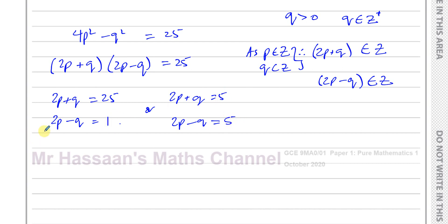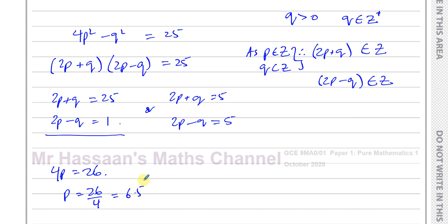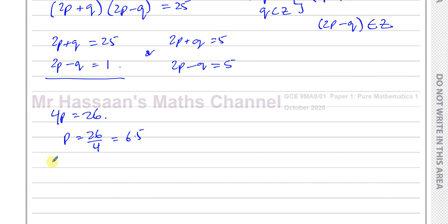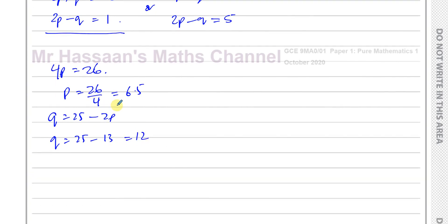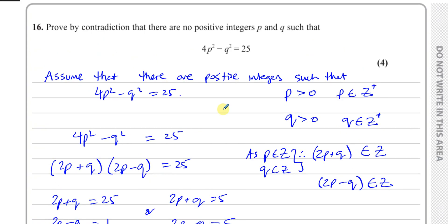So if we solve each of these simultaneously — let's take the first pair. If we add the two equations together, we get rid of Q: 4P = 26, so P = 26/4 = 6.5, which is not an integer. And Q = 25 − 2P = 25 − 13 = 12. So if this is the case, we've got P = 6.5 and Q = 12. This is a contradiction, because we said that P is a positive integer. So therefore we've got a contradiction, which shows that our assumption is false.